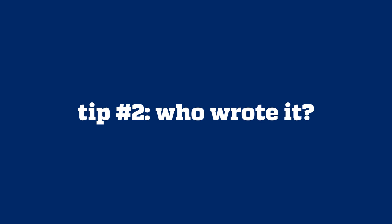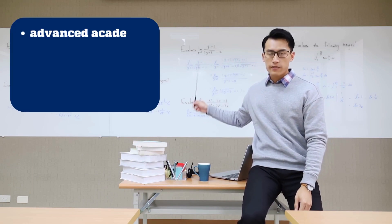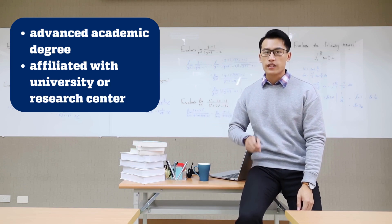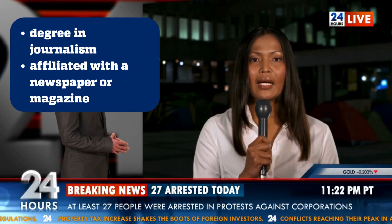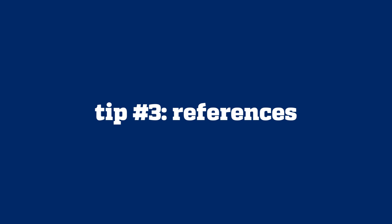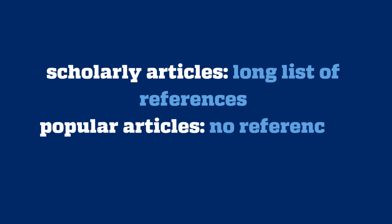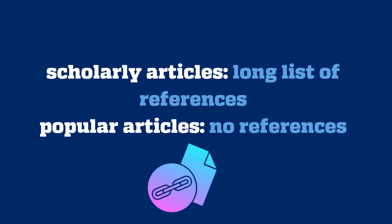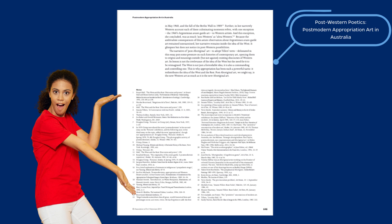You can also often recognize a scholarly article by looking up the author and their credentials. The author of a scholarly article will typically have an advanced academic degree, and they're often affiliated with an academic institution or research center. Popular article authors, on the other hand, may have a degree in journalism or a related field, and they're most likely associated with a newspaper or magazine. Another thing to look for is a list of references — sometimes referred to as bibliography or references — at the end of the article. Scholarly articles will typically have a long list of references, whereas popular articles will usually not have a reference list at all. If the author does cite sources, they will often be hyperlinked directly within the text. Here's just the first page of the long list of references at the end of 'Post-Western Poetics, Post-Modern Appropriation Art in Australia,' for example.